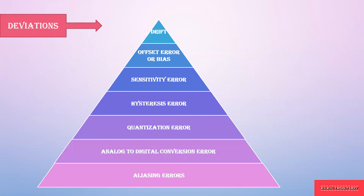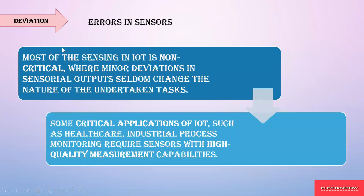Next, what is sensor deviation? There are different sensor deviations: drift, offset error or bias, sensitivity error, hysteresis error, quantization error, analog to digital conversion error, and aliasing error. These are the errors termed as deviations of the sensor — deviation is nothing but errors occurring in the sensor.